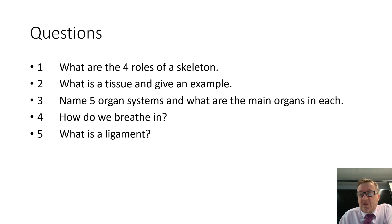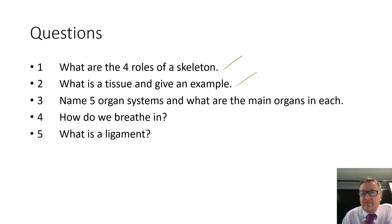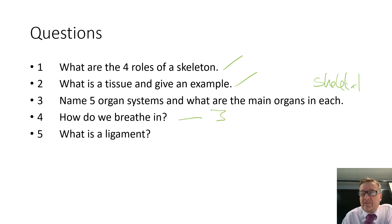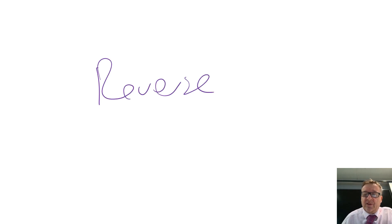You've now got five questions to answer based on the video. One: what are the four roles of the skeleton? Two: what is a tissue — give an example. Three: name five organ systems and their main organs. Four: how do you breathe in — describe the three stages. Five: what is a ligament? If you've concentrated on the video and answered those questions, you should have enough knowledge that when your teacher covers this in lessons it will be clearer and you'll pick up the information more easily. That completes the Reverse the Classroom for Body Systems.